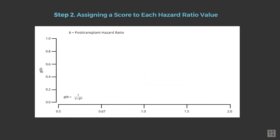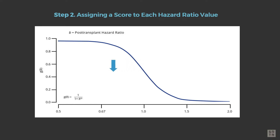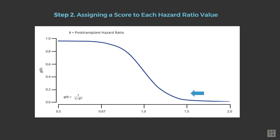To assign a score to the program, we apply a score function. This function assigns more value to hazard ratio estimates less than one, indicating better than expected performance, and less value to estimates higher than one. This is shown here as the score curve gradually declines from left to right.